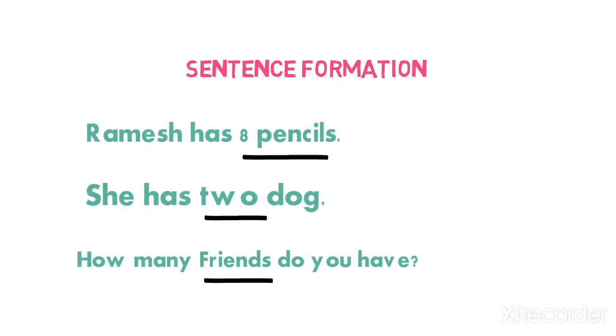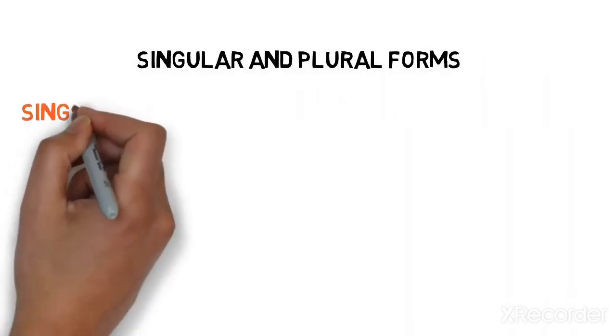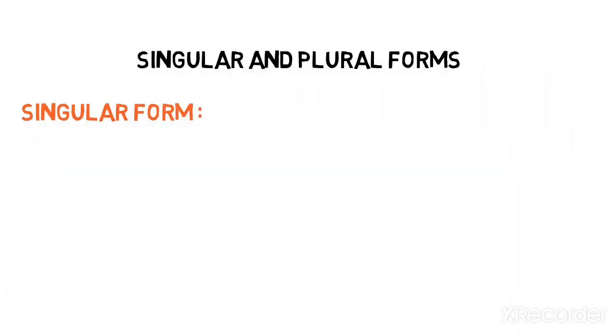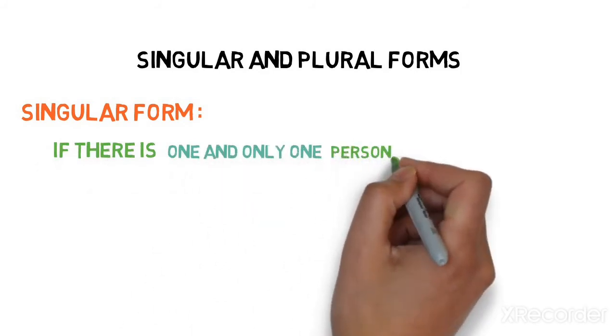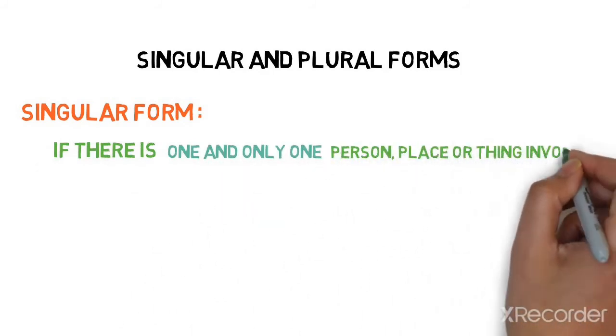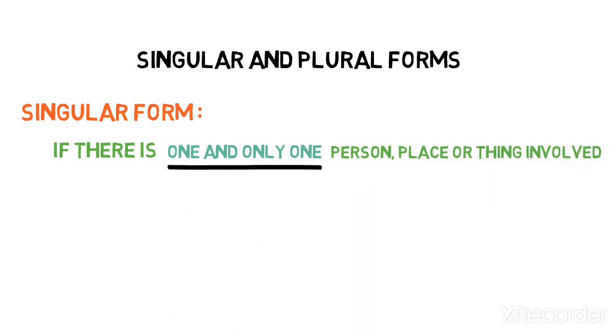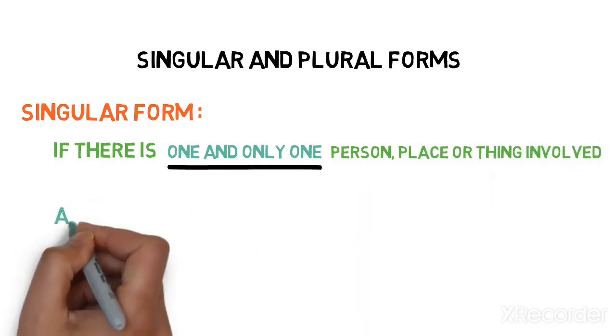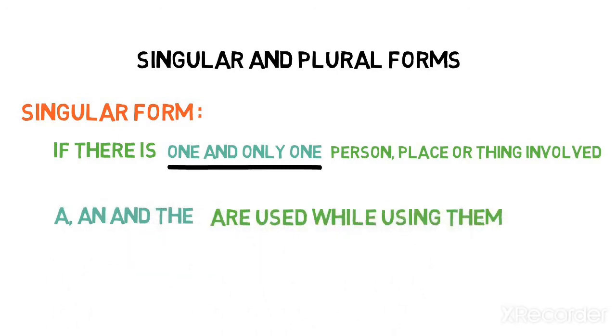Countable nouns are basically divided into two more categories. So what are singular forms? If there is one and only one person, place, or thing involved, then we can call them as singular forms. A, an, and the are used while using them.